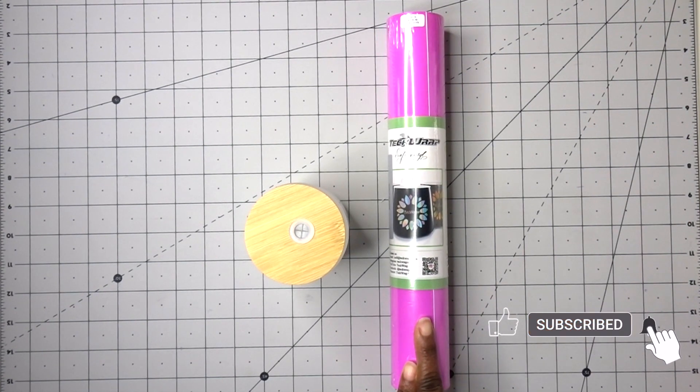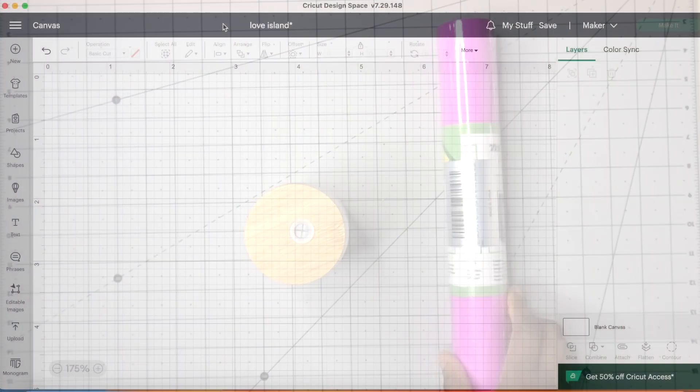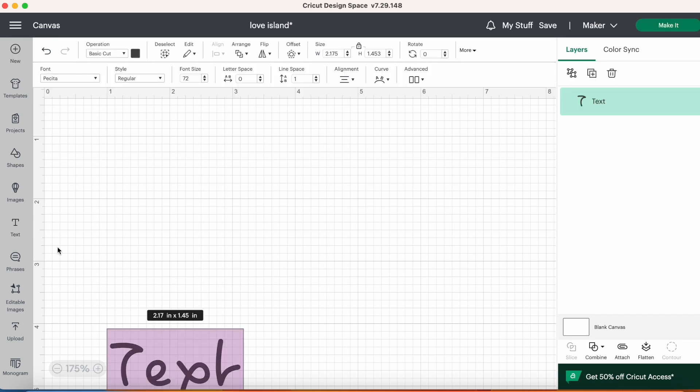I'm in Cricut design space and I've already downloaded the font that's very similar to the one they use in Love Island. It's called the Pesita and it's available free on the font. I'm just going to start typing out my name here with the Pesita font.